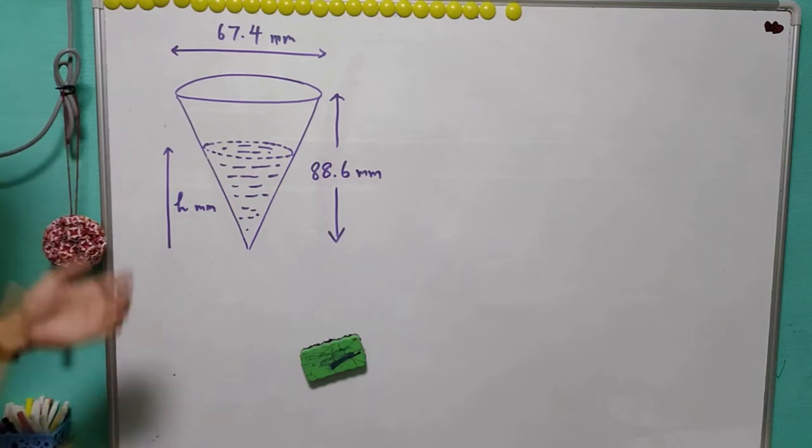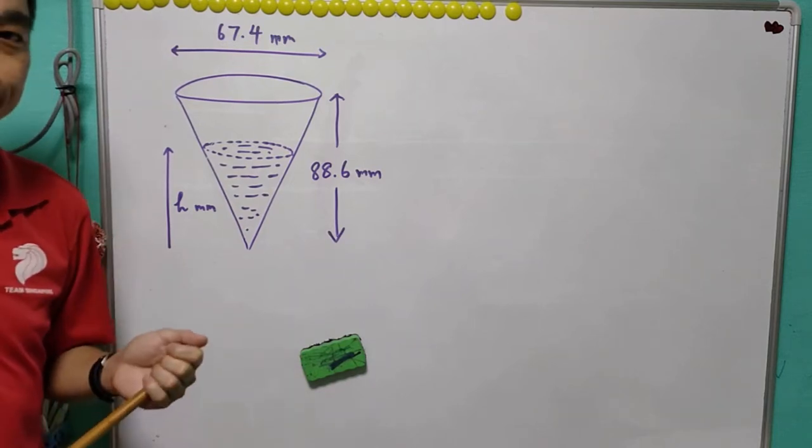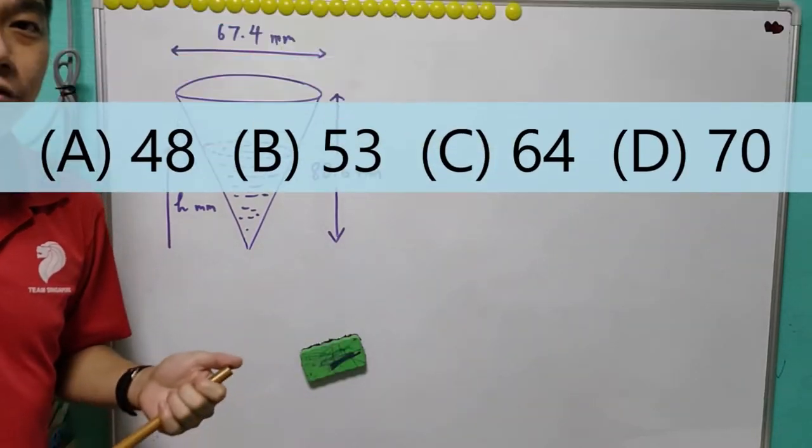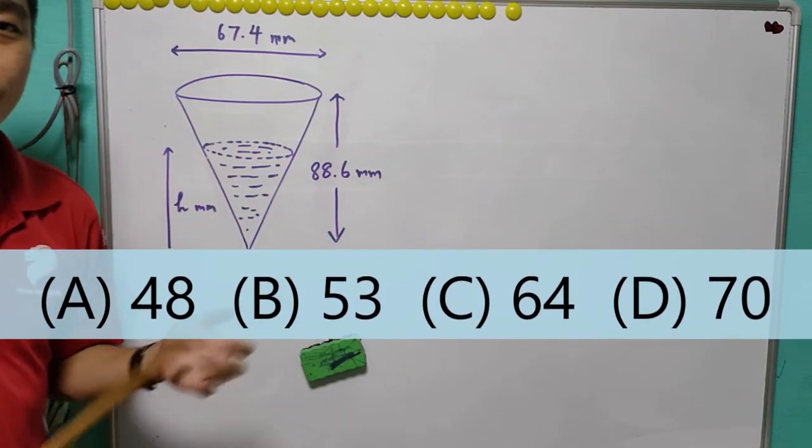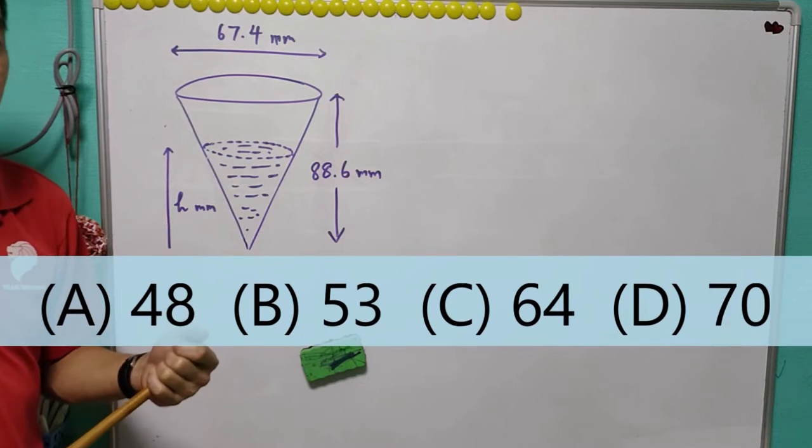And we are asked to choose an integer that close to the value of h. So A, 48. B, 53. C, 64. And D, 70.